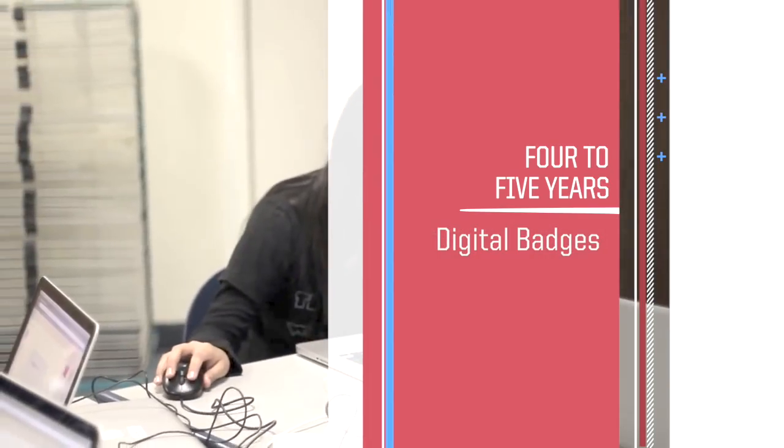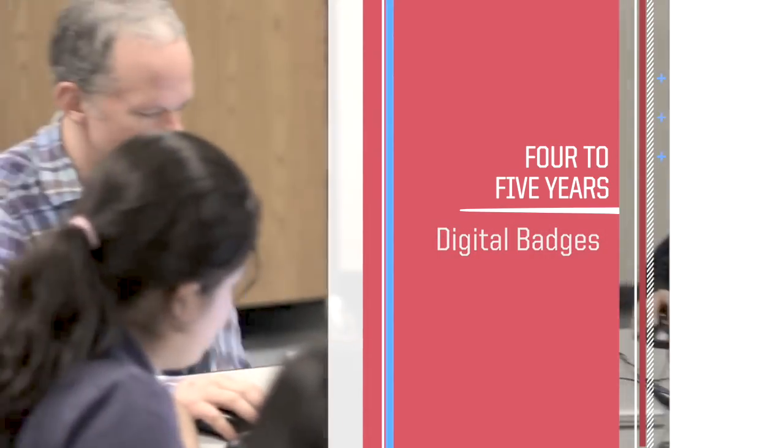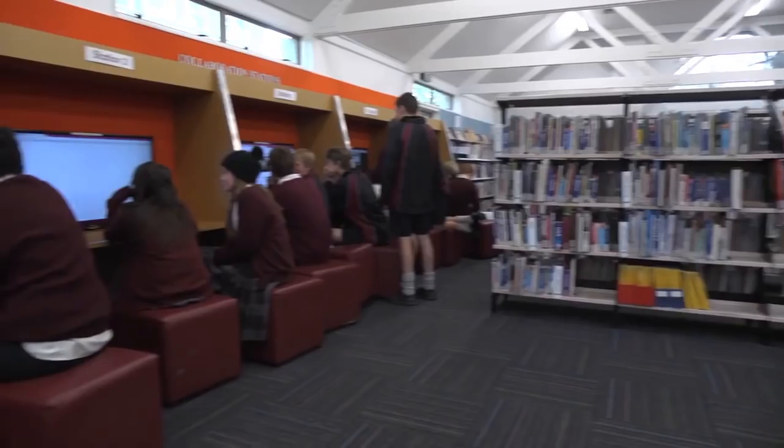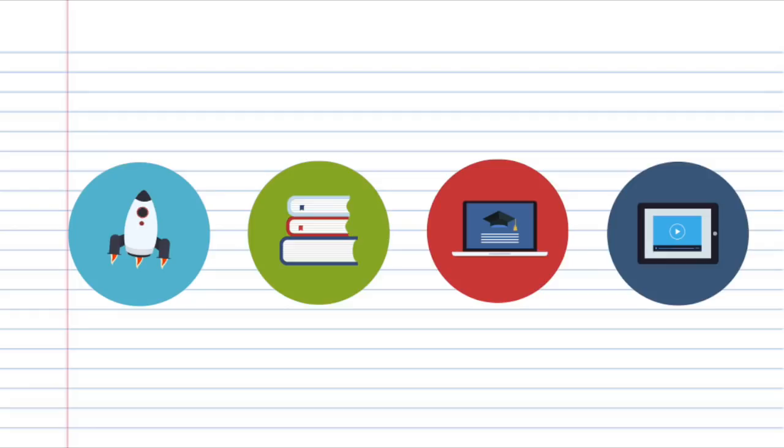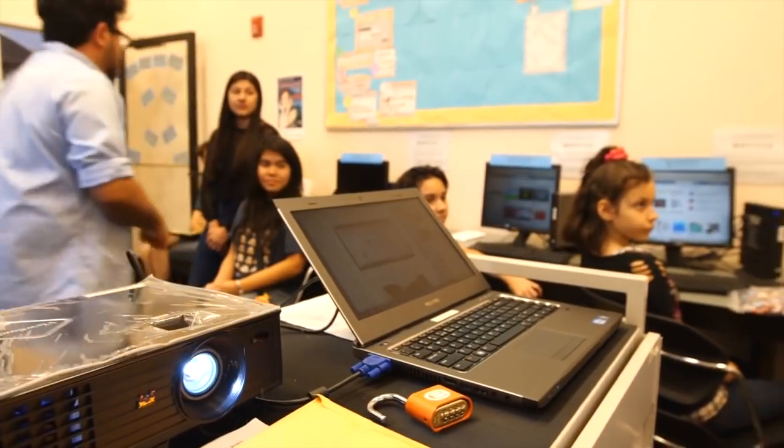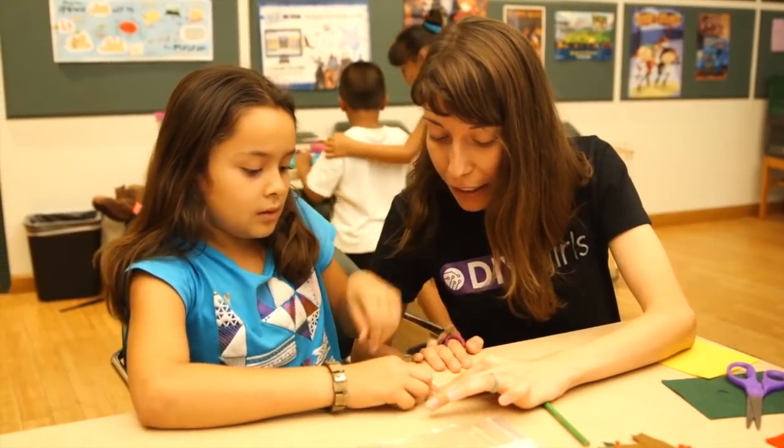In the four- to five-year adoption horizon, digital badges are seen as a way to grant certification for formal and informal learning in the form of microcredits, which assess learned skills based on outcomes rather than seat time. More schools are looking to badges as an alternative method of validating learning achievements, not just for students, but teachers as well.